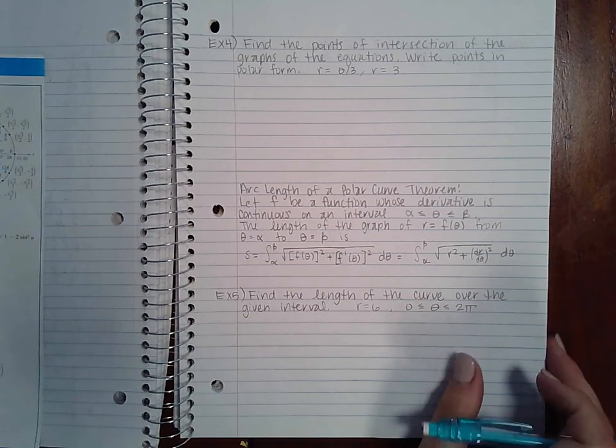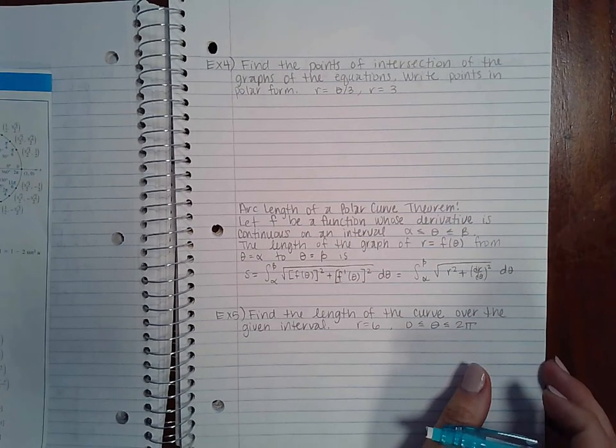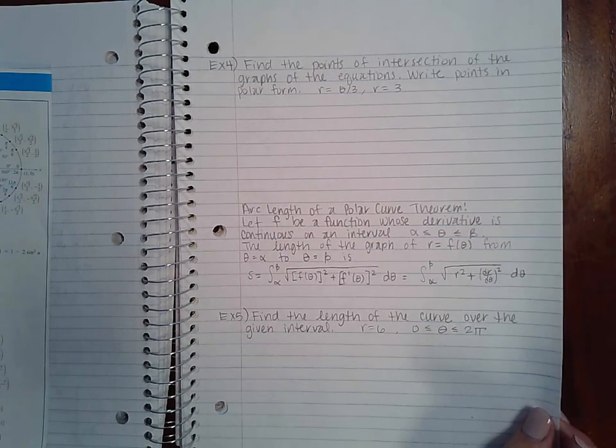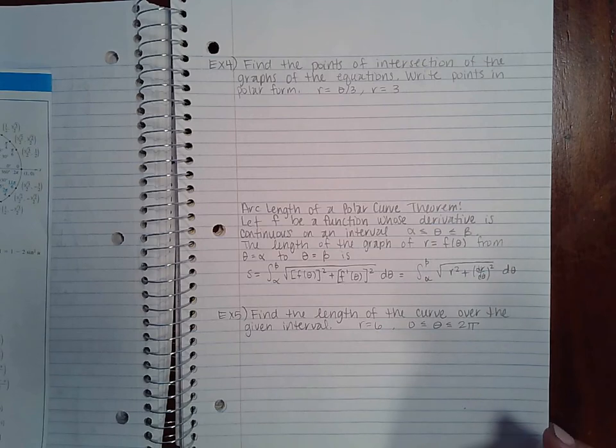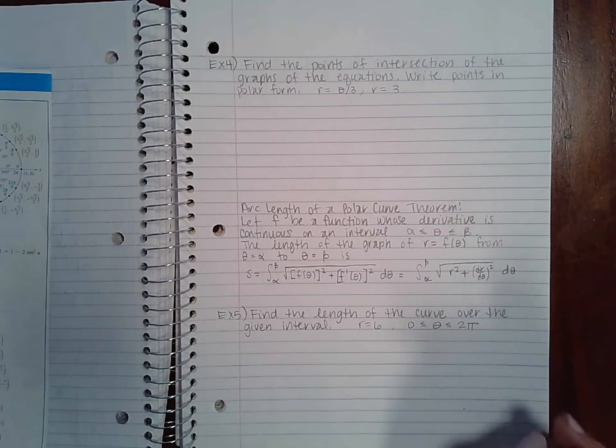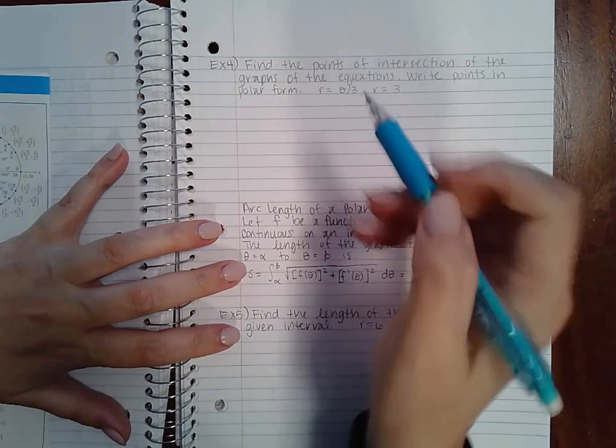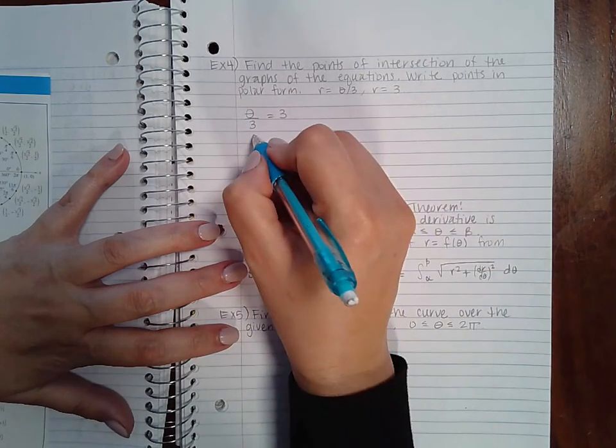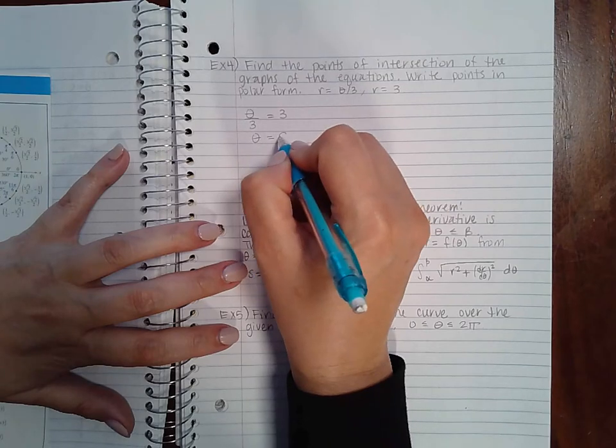So here we're going to find the points of intersection for the graphs of these two equations. It says write the points in polar form. So if these are both radiuses, then you want to see where these two things are equivalent to each other, which means theta would equal nine.